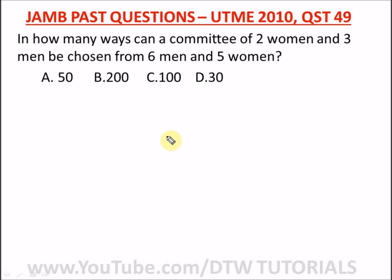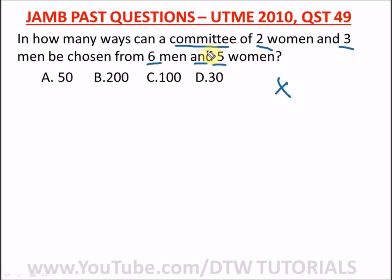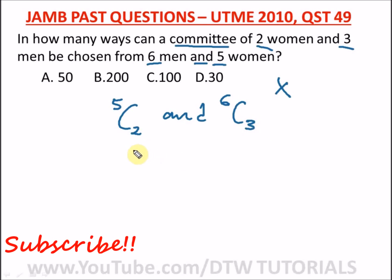Our next question, from JAMB 2010, question 49: 'In how many ways can a committee of two women and three men be chosen from six men and five women?' When you see 'committee' in your exam, you know you're talking about combination. We multiply the two combinations together — selecting two women from five women and three men from six men. That gives 5 combination 2 times 6 combination 3.